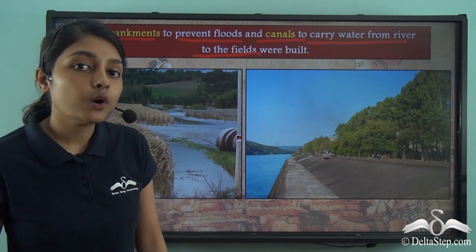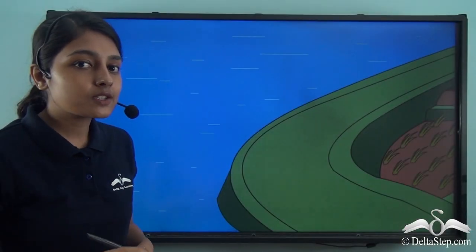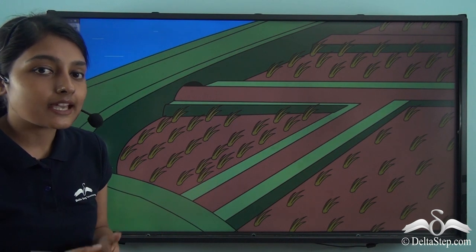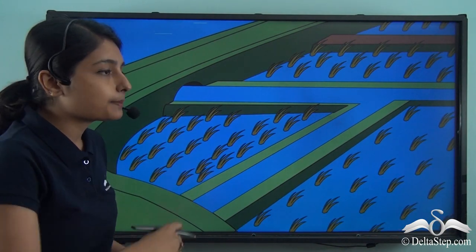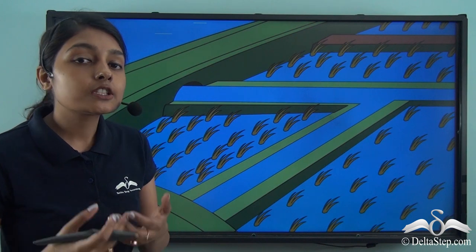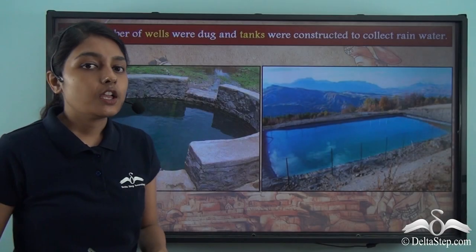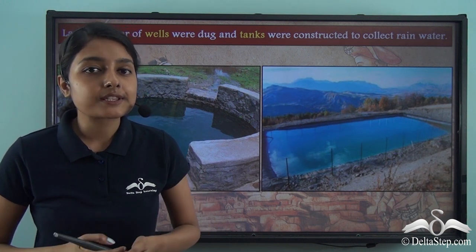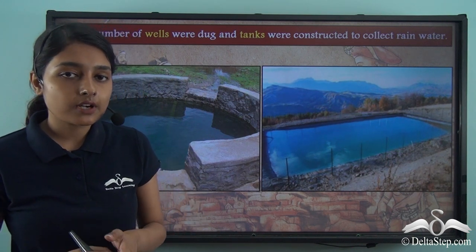Canals were built to send water to the agricultural lands, so the agricultural lands never faced shortage or paucity of water. And in the places where water reached sufficiently, even two crops grew in one year. So to prevent flooding of agricultural lands, embankments were made, and to provide water to the agricultural lands, canals were also constructed.